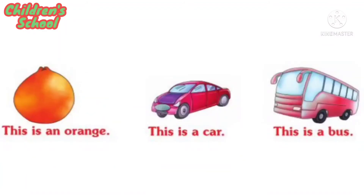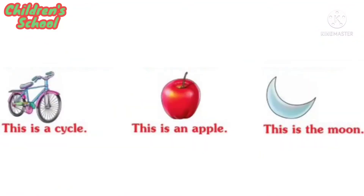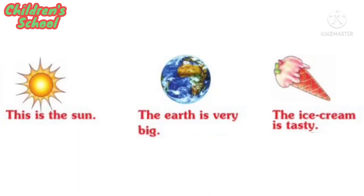This is an orange. This is a cow. This is a bull. This is a cycle. This is an apple. This is a moon.